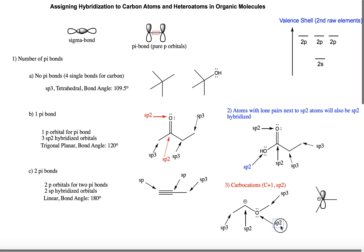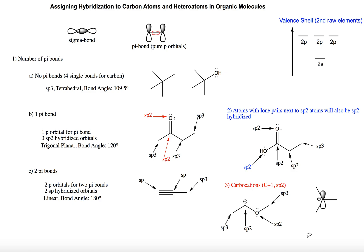With that in mind, you should be able to quickly and correctly assign hybridization to any atom in any organic molecule by following these steps: looking at the number of pi bonds, looking at atoms with lone pairs next to SP2 hybridized atoms, and making sure that if you have carbocations, you know they are SP2 hybridized. Thank you, and I hope this was helpful for you.